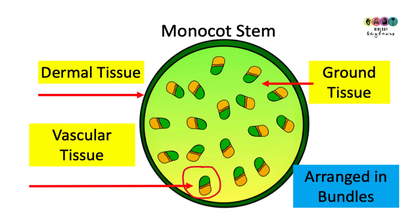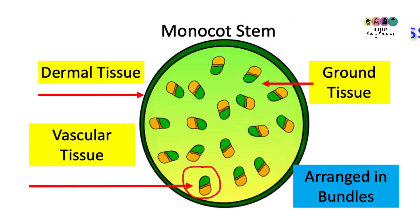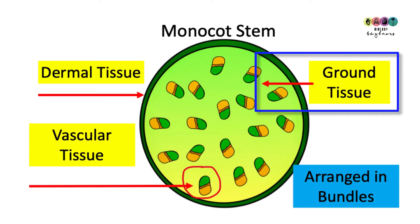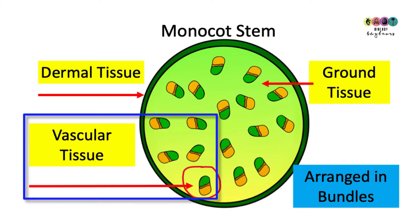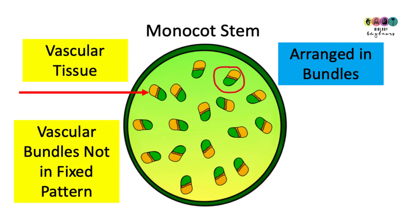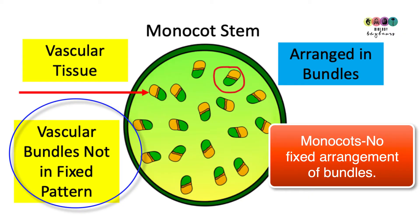This diagram is a transverse section or cross-section of a monocot stem. It's really important to always mark in the three types of tissue: dermal tissue on the outside, ground tissue making up the bulk of the stem, and vascular tissue arranged in vascular bundles containing xylem and phloem. The key feature of a monocot stem is the arrangement of those bundles — there is no fixed pattern; they are scattered throughout the stem.